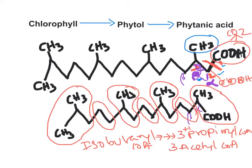The fate of propionyl CoA: propionyl CoA is converted to methylmalonyl CoA, which is then converted to succinyl CoA. Succinyl CoA enters the TCA cycle and can be used for energy or converted to glucose — that's why branched chain fatty acid oxidation can give rise to glucose. Acetyl CoA enters the TCA cycle and is completely oxidized to CO₂, or if the TCA cycle is saturated, it can be converted to ketone bodies.